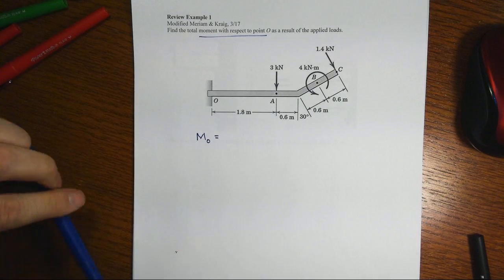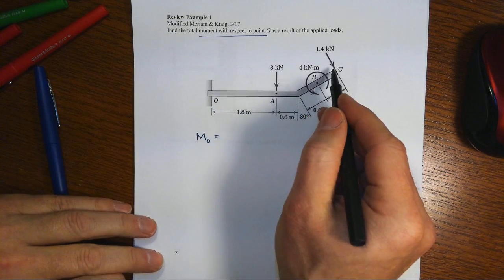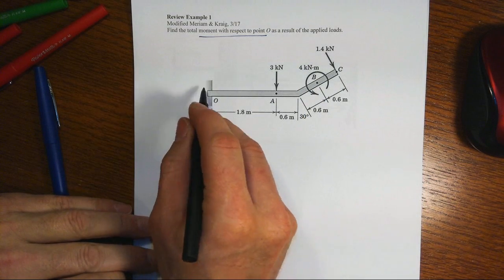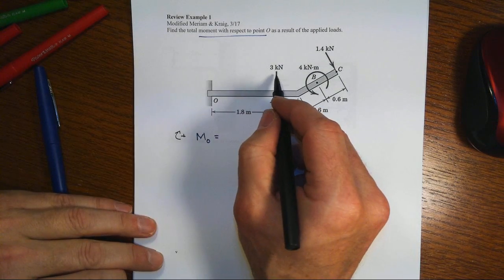Remember that a moment is just a force times its perpendicular distance. We've got to keep track of the sign - looks to me like potentially at least these two concentrated forces want to spin the system in a clockwise fashion about O, so I'll take that as our positive.